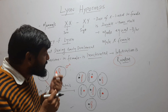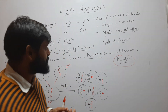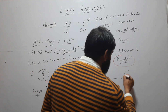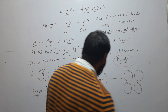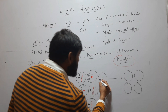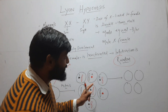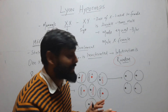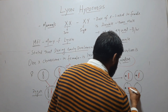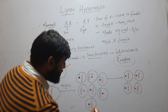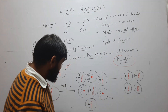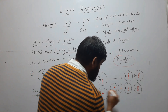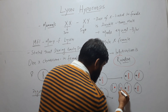The important thing to note here is that all the descendants of these cells will maintain the same inactivation. Suppose we take this cell — during development, this cell will further divide and form many cells. All the cells that arise from this cell will have the same X chromosome inactivated. If X number one is inactivated here, then all descendant cells will also have X number one inactivated. If X number two is inactivated, then all descendants of that cell will have X number two inactivated.